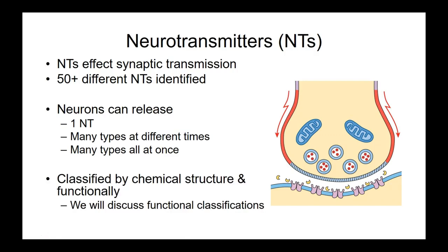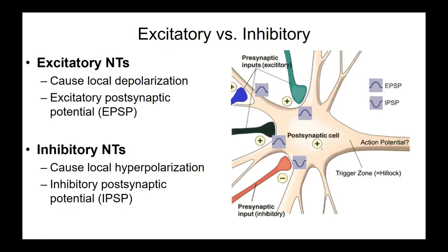There are ways to classify neurotransmitters. If you have a strong chemistry background, you'll understand the chemical classification scheme based on chemical structure. We're going to use a functional classification scheme instead. Be aware that in the literature, the chemical structure classification is often used.